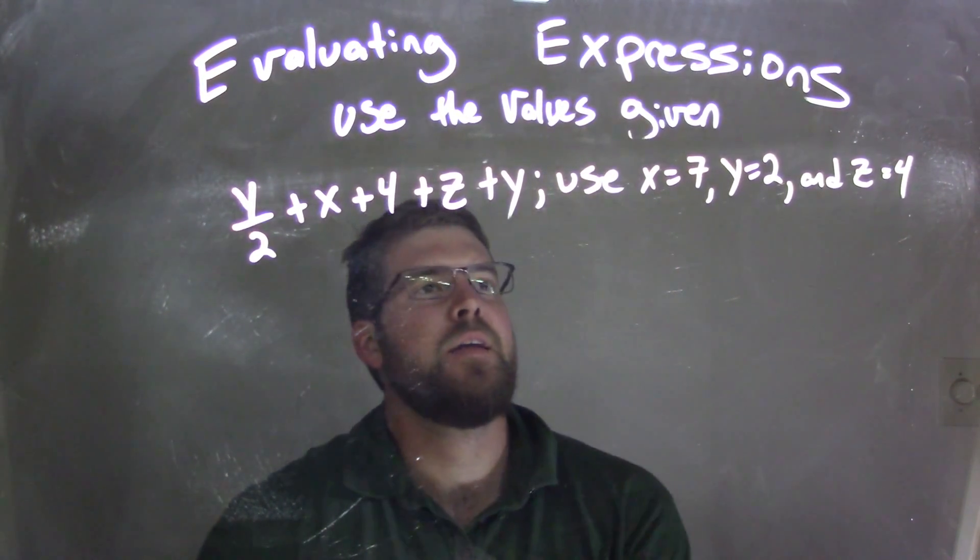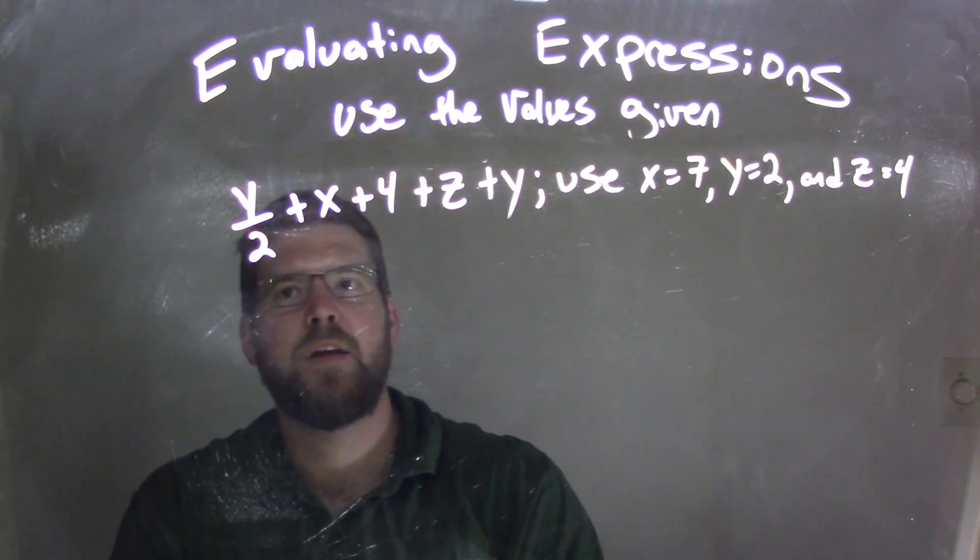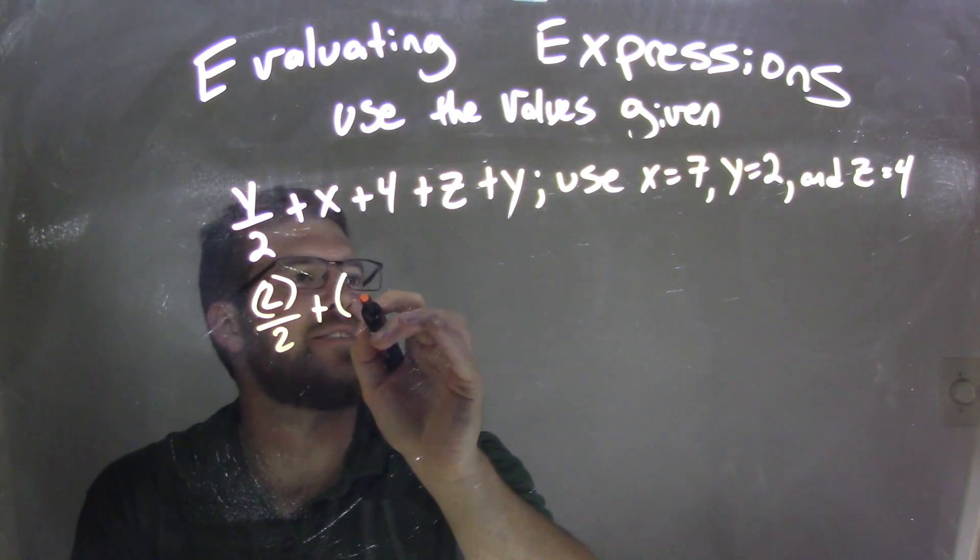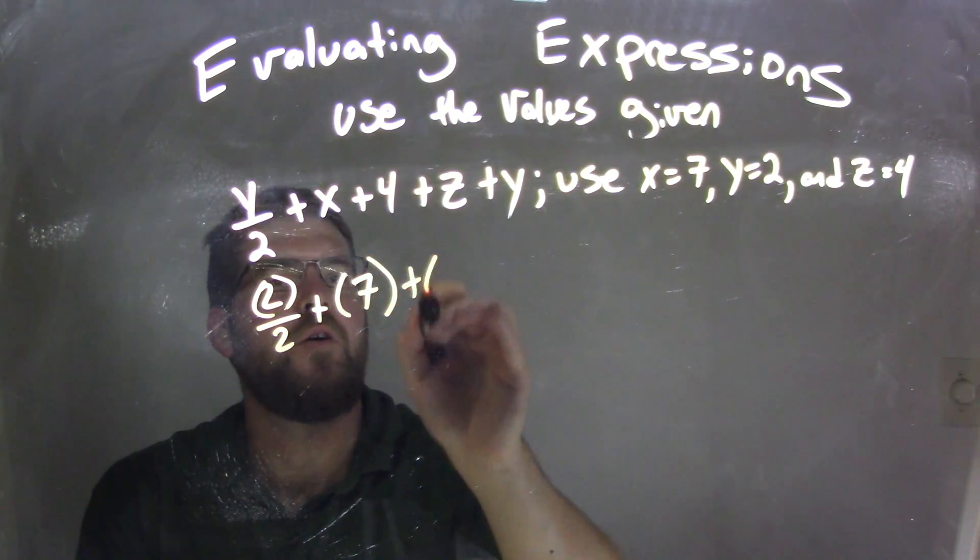Well, we're going to substitute each one of these variables to the corresponding values. y equals 2, so 2 up here, over 2, plus x, which is 7.